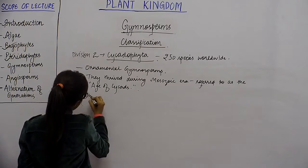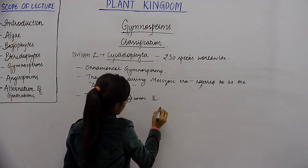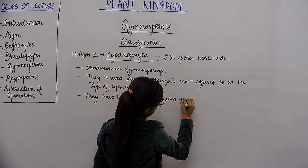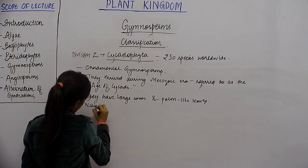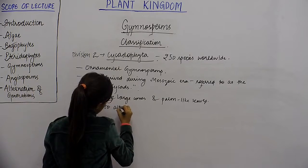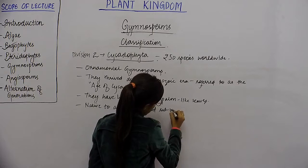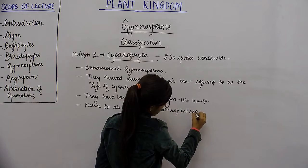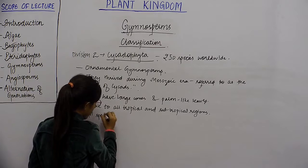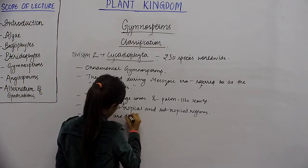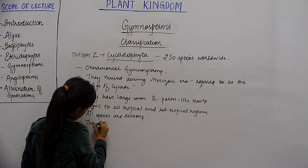Cycadophyta have large cones and palm-like leaves. They are native to all tropical and subtropical regions. All species are dioecious and they all have coralloid roots.